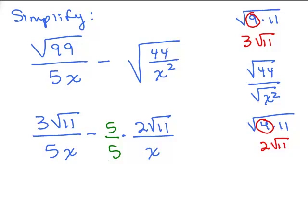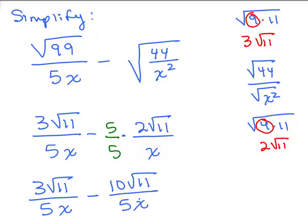So I'm going to multiply the top and bottom of this by 5 over 5 so that I can get a common denominator. So what do I have? In this first fraction I have 3 square roots of 11 over 5x minus, now what do I have in the numerator of the second fraction, 10 square roots of 11 over 5x.